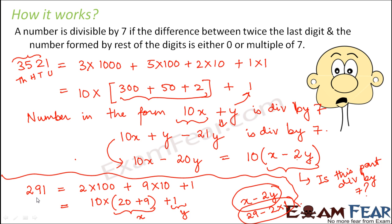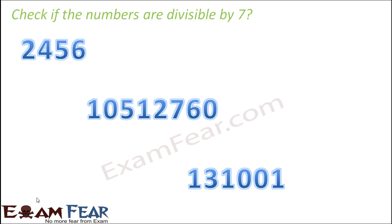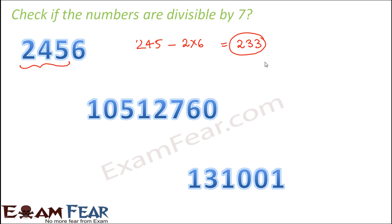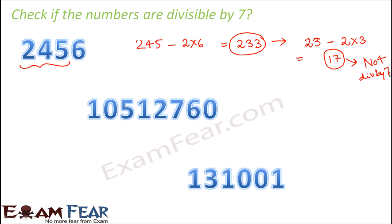At your level you may not have studied divisibility by 7 in your textbooks, as it is slightly more difficult than other rules, but it is included here to satisfy your curiosity. Now let us check the number 2456: 245 − 2 × 6 = 233. Repeating: 23 − 2 × 3 = 17. Since 17 is not divisible by 7, the number 2456 is not divisible by 7.